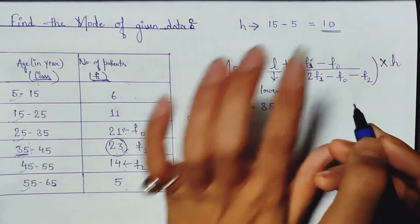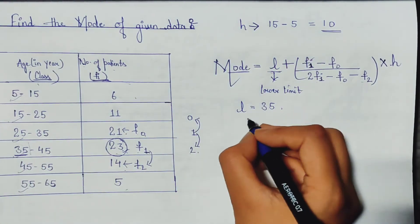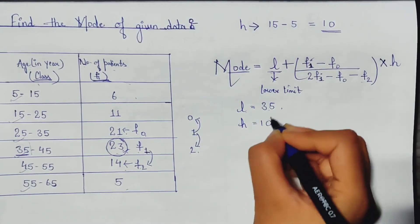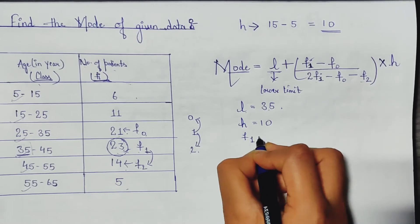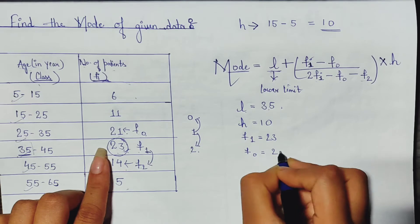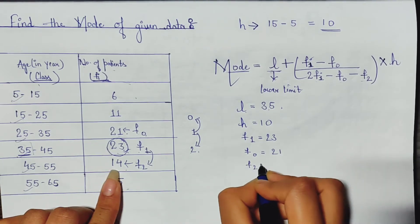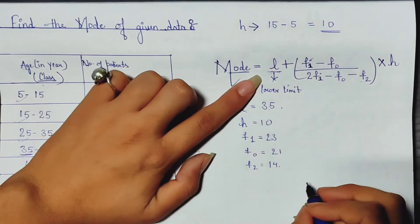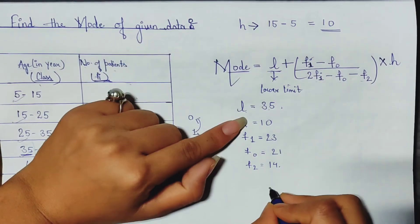Now just put all the values. H is 10, L is 35, f1 is 23, f0 is 21, and f2 is 14. Now just put all this value in the question. L, that is 35, plus f1, f1 is 23 minus f0, that is 21, divided by twice of f1...